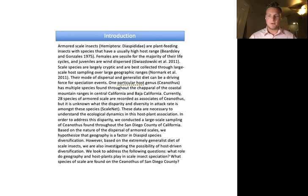In order to address this disparity, we conducted a large-scale sampling of Ceanothus in San Diego County. Based on the dispersal method of armored scales, which is via the wind, we hypothesized that geography is a factor in diaspid species diversification. However, based on the scale's extremely generalist diet, we're also investigating the possibility of host-driven diversification. So what roles do both geography and host plants play in scale speciation? And what species of scale are we finding on the Ceanothus of San Diego County?